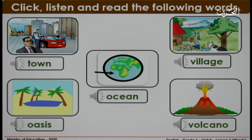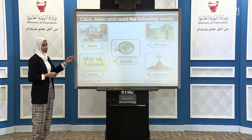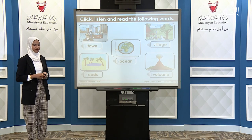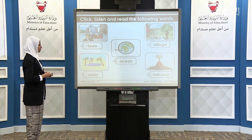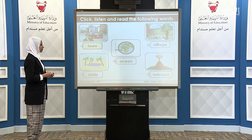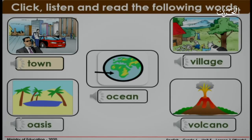Now, I want you to look at the pictures, read, and repeat after me. Town. Village. Oasis. Ocean. Volcano.